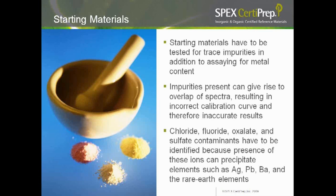The certified reference material — in future I will be abbreviating this as CRM — is made from very high-purity metals. Where such high-purity metals are not available, they are produced from very high-purity compounds. In addition to assaying the metal content before its use in CRM, the starting material should be tested for trace impurities, as these impurities can cause overlap of spectra, producing inaccurate results. Besides these trace metal impurities, anions like chloride, fluoride, oxalate, and sulfate contaminants have to be identified, because the presence of these ions can precipitate elements such as silver, lead, barium, and rare earth elements.